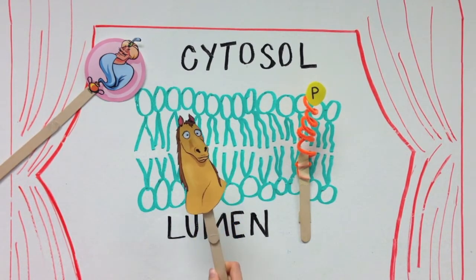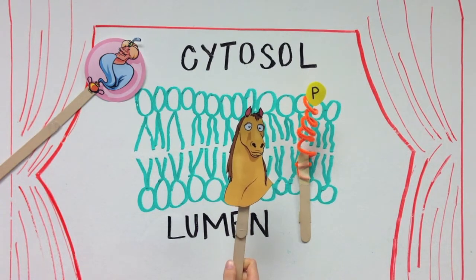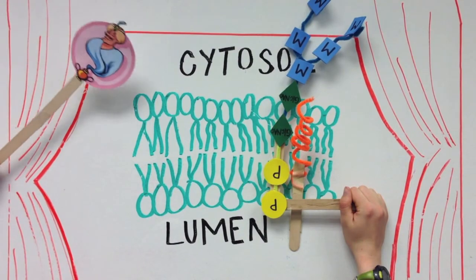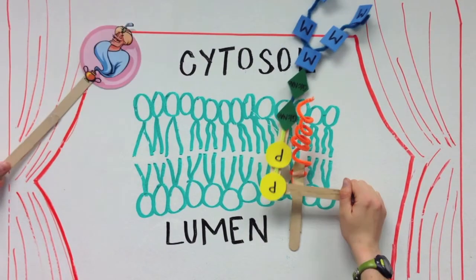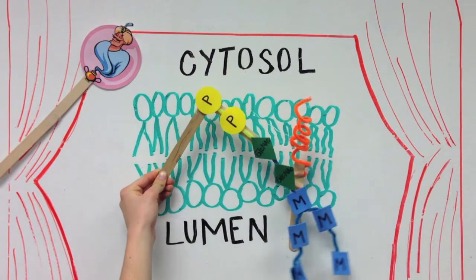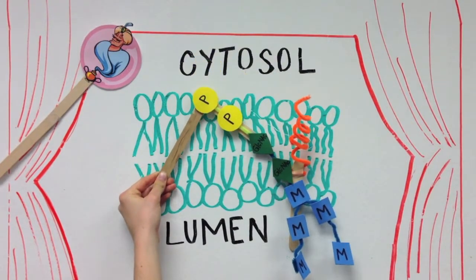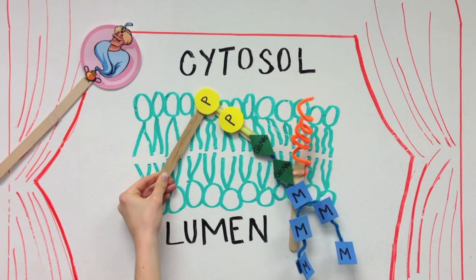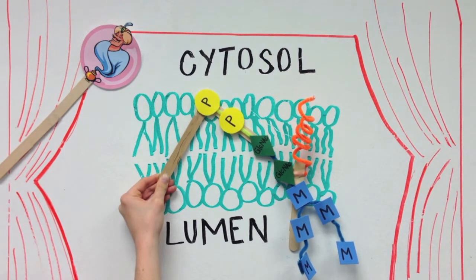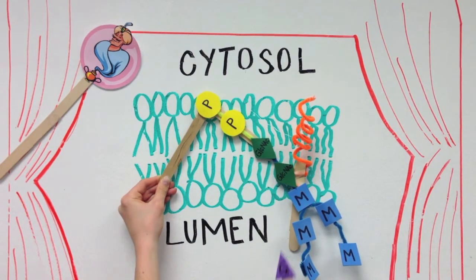But why do they go to the ER lumen? After flipping, further processing occurs in the ER lumen. Four more mannoses and three glucose are added to get the complete 14 residue precursor bound to dolichol phosphate.